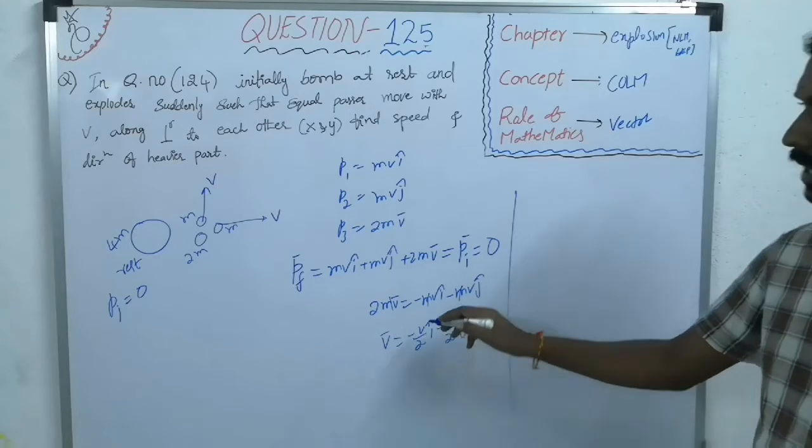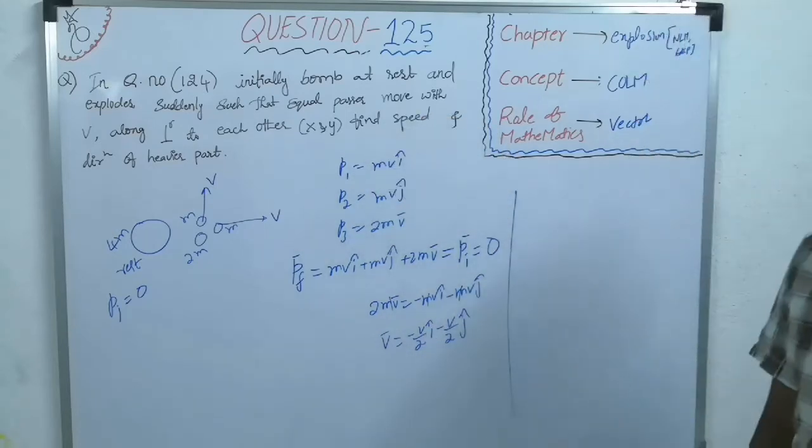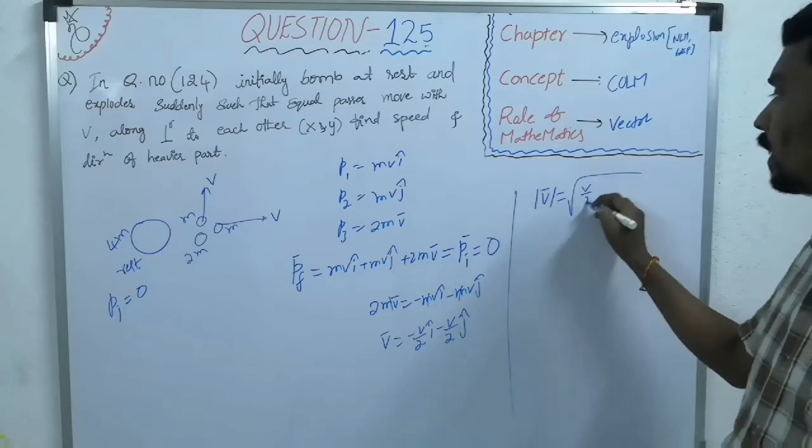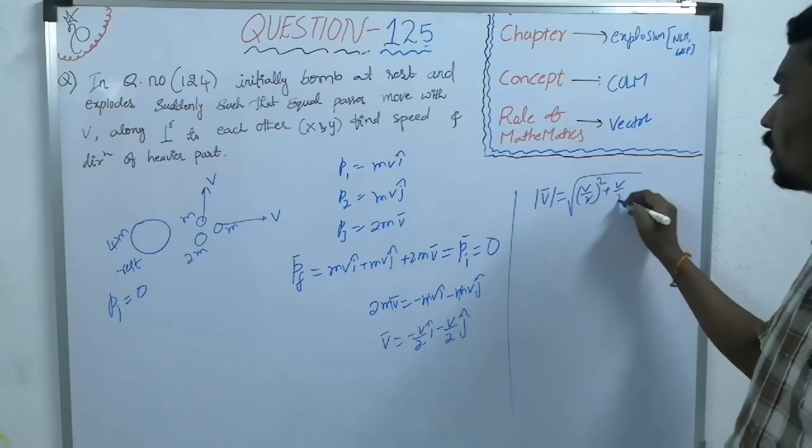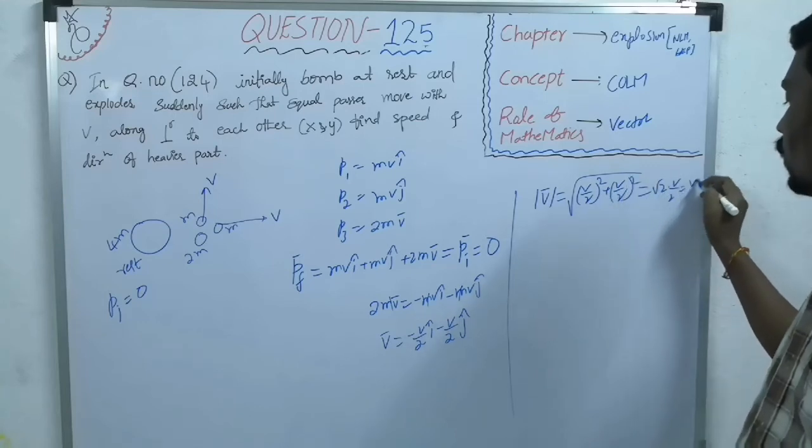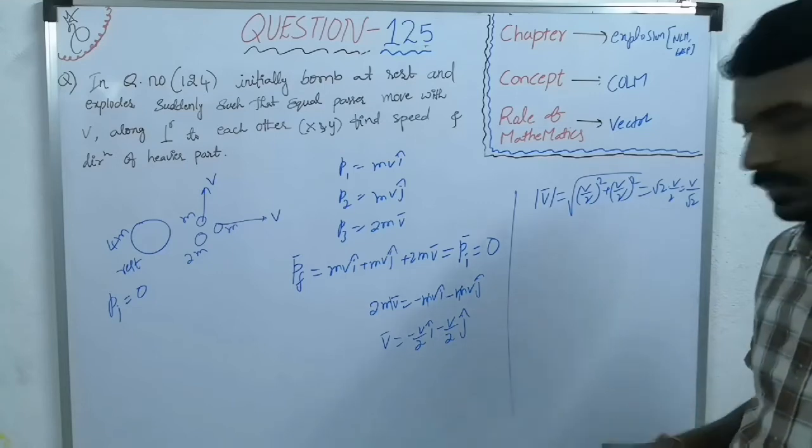So, this is the velocity of the heavier part after explosion. And, if you want to find the magnitude under root v by 2 whole square plus v by 2 whole square, that is, root 2 v by 2, v by root 2. And,